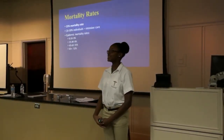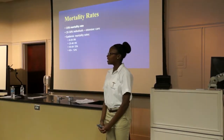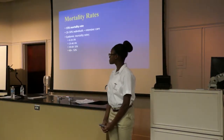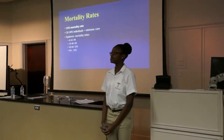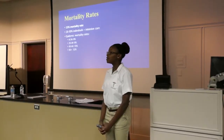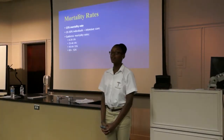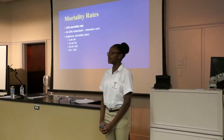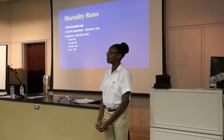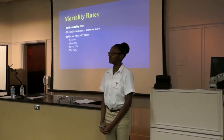SARS has a 15% mortality rate, and 20 to 30% of patients who contract it end up in the intensive care unit. During the 2002-2003 epidemic, the mortality rate for ages 0-24 was 0%, ages 25-44 was 6%, ages 45-64 was 15%, and above age 65 was 52%. Scientists do not yet understand why the mortality rate increases with age, as it is not explained by the SARS coronavirus makeup.